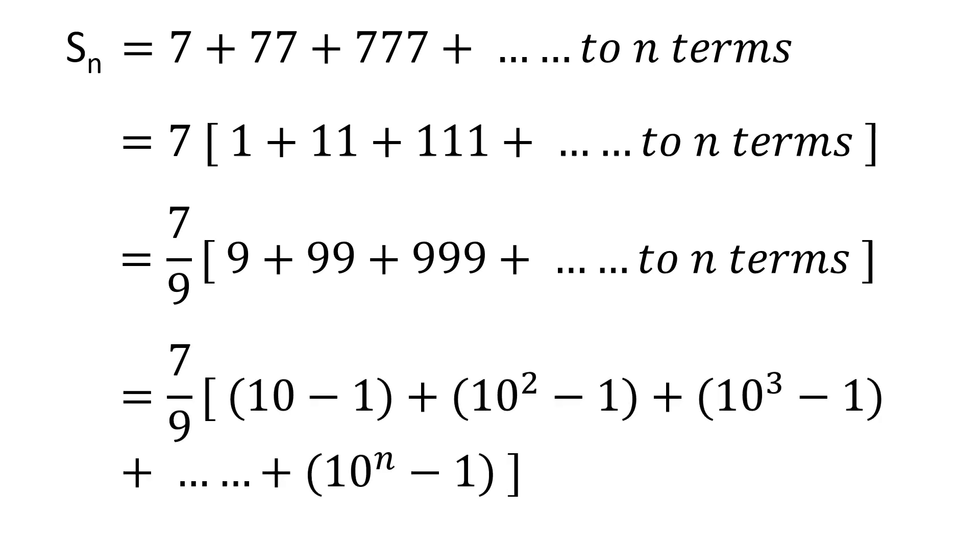Observe that the first term in the square bracket, which is 9, can be written as 10 minus 1. The second term can be written as 100, that is 10 squared, minus 1. Similarly, we can write the third term as 1000, that is 10 cubed, minus 1, and so on. Continuing up to the nth term, we can write the nth term as 10 raised to the power n minus 1.